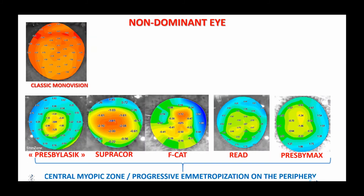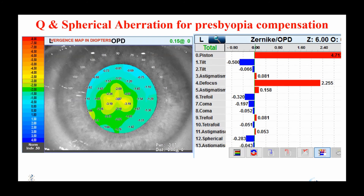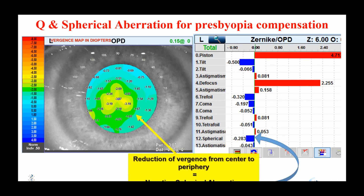Let's return to the characteristics of the non-dominant eye after corneal multifocal surgery. Beyond the marketing efforts to differentiate these strategies, they all have a common base. In all these techniques, the zone dedicated to near vision is in the center — it's a myopic area — and the zone dedicated to far vision is on the periphery, as confirmed on the vergence maps. In classical monovision, the difference is that the myopic area is distributed over the entire pupillary surface. In all these techniques, the ocular wavefront analysis will show an increase in negative spherical aberration.